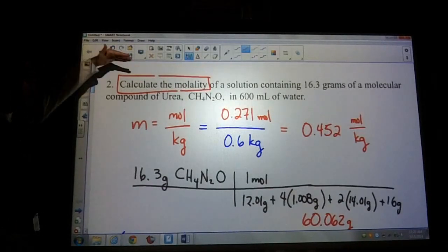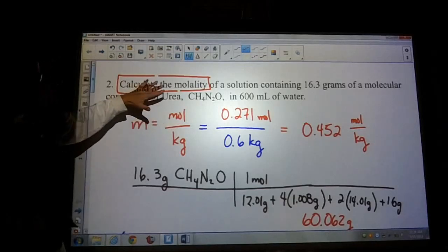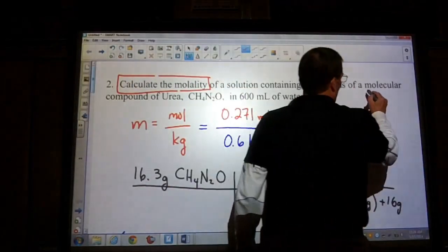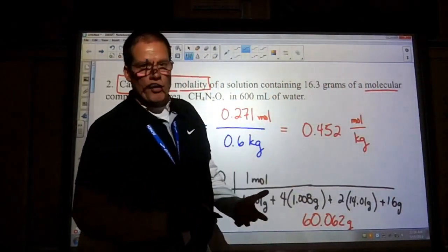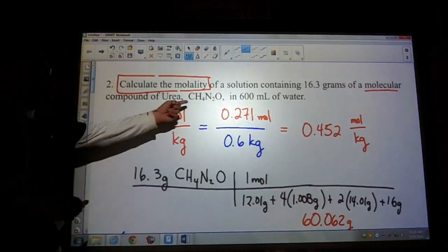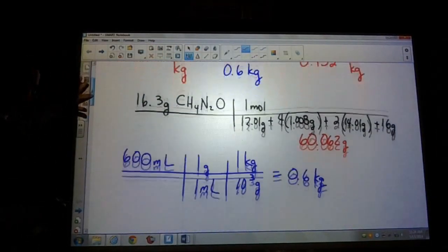Looking at this question, make sure that you box in the information that's actually given to you. Identify the type of question you're looking at. Realize that we do have a molecular compound, but it doesn't matter in this case because we're not doing a freezing point or a boiling point deviation there. And obviously, be able to change that into moles.